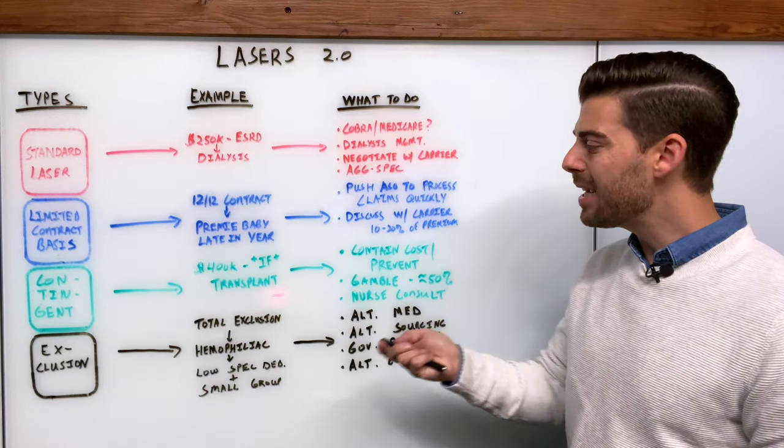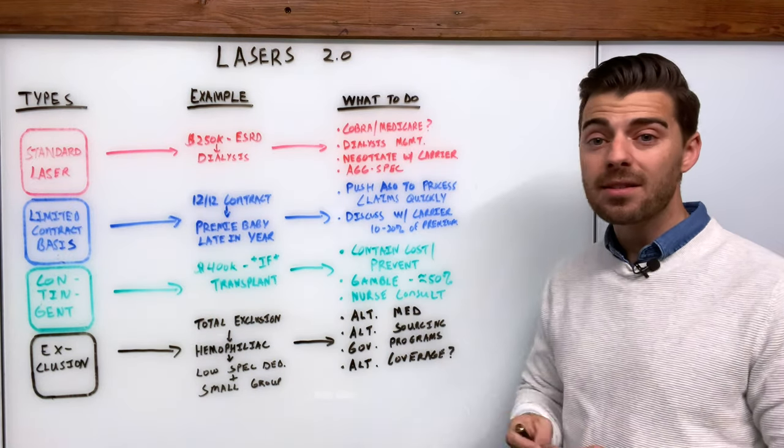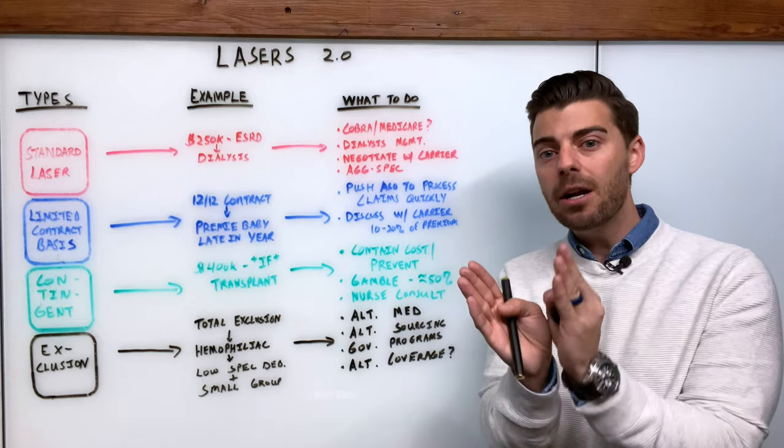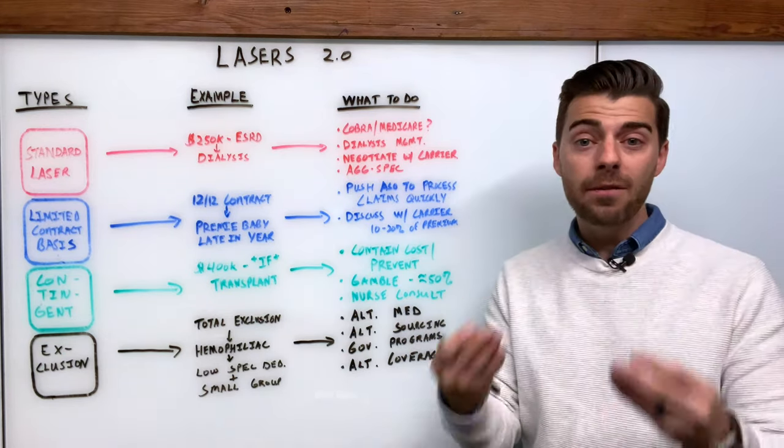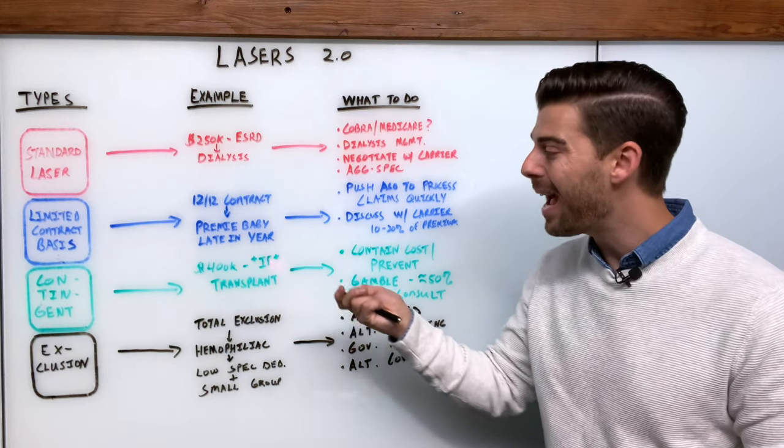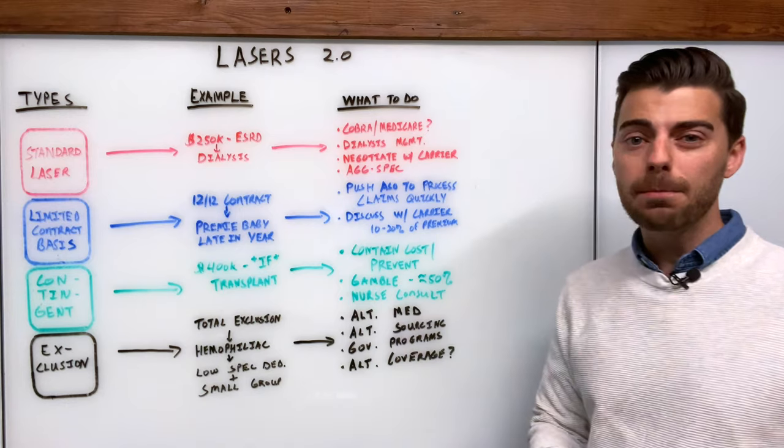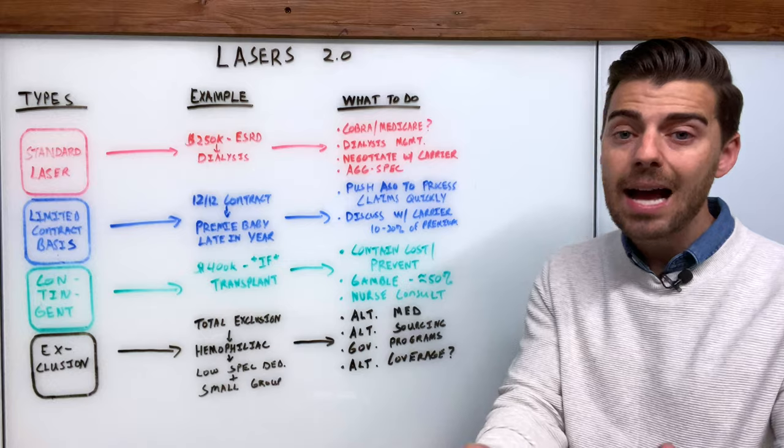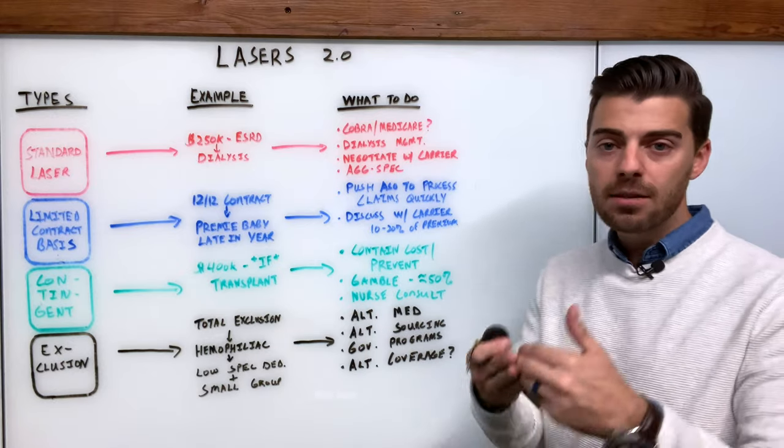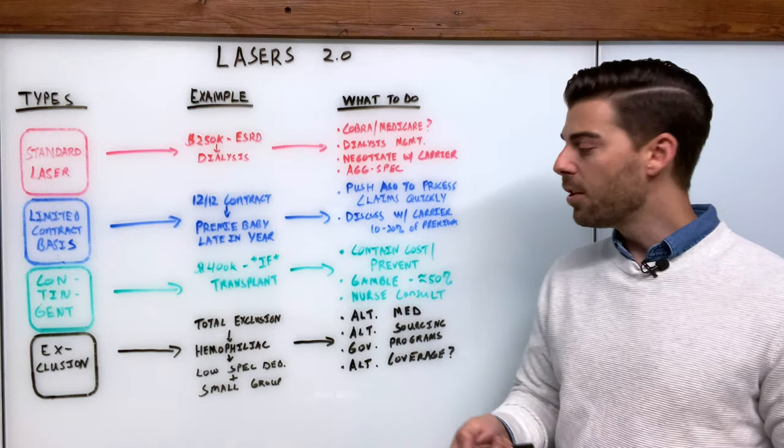What would you do in a contingent laser instance? Well, one, you'd really be focused on, since there's a certain set of criteria that have to be met, a very isolated condition, then maybe you're looking at cost containment or prevention programs to keep that person from actually getting a transplant, or maybe you can delay the need for that transplant for a couple years down the road. And maybe there's even a fully insured transplant policy that you could buy, assuming that there's not some exclusions that that carrier would assess for that individual.